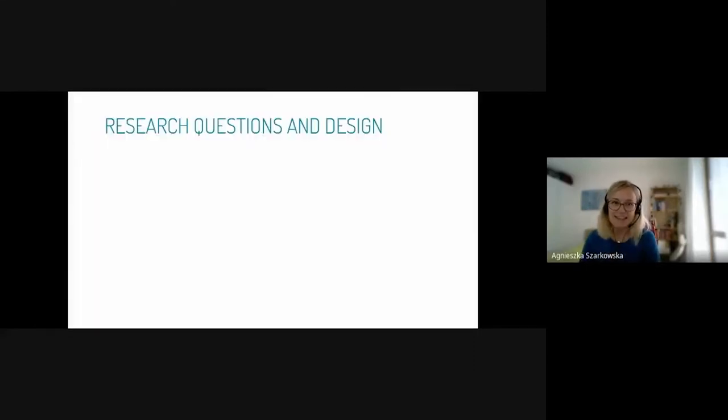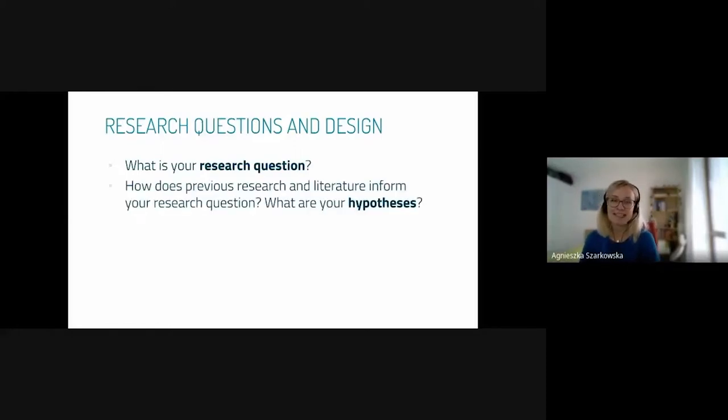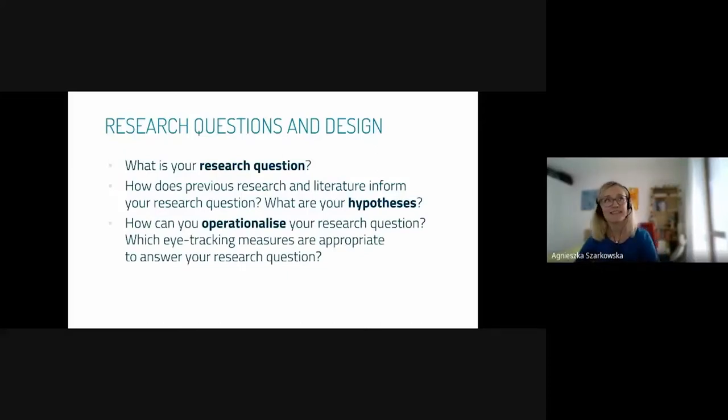Starting with research designs, one of the main issues that strikes me is that not everyone has a research question in the first place. I think it's important to realize what is your main research question, and also to know how it relates to what was done previously. In some reviews, it seems the authors haven't really read anything done before. They don't even know that things were done. How do previous research and literature inform your research question and what are your hypotheses?